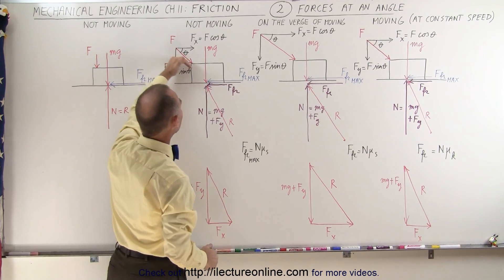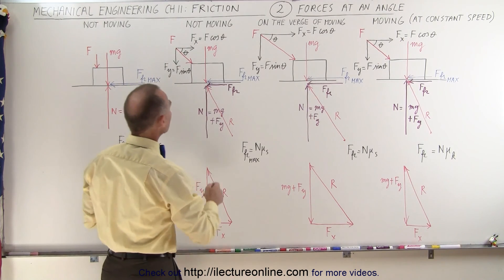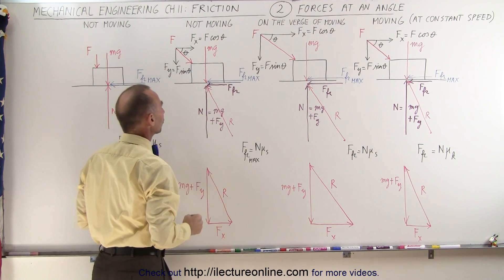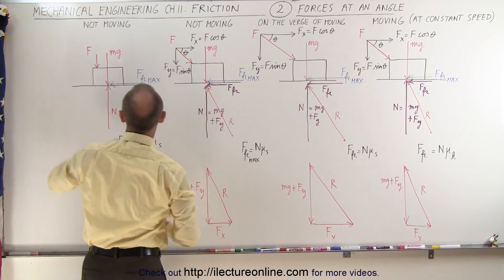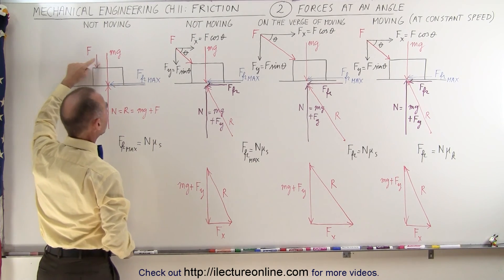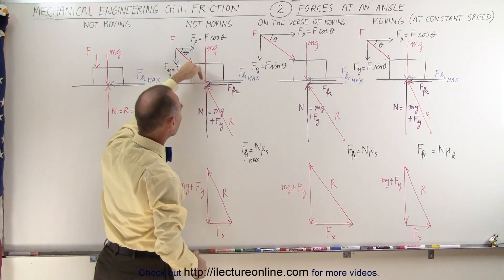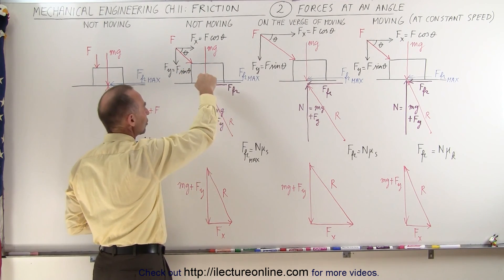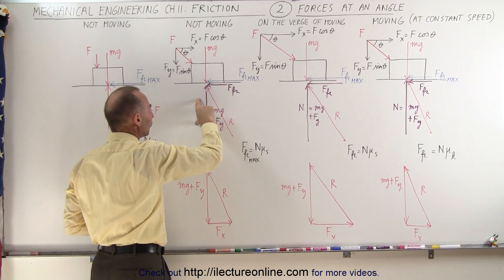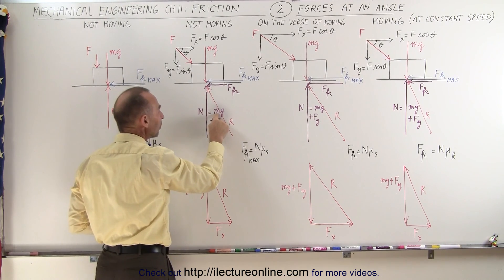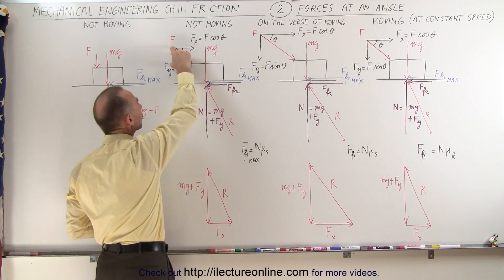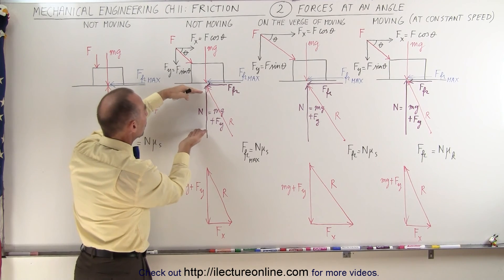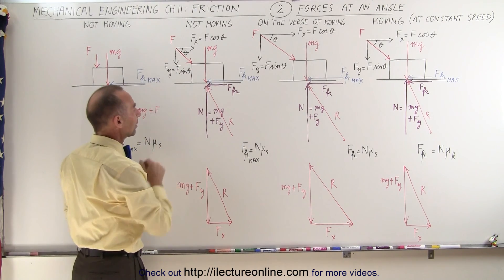Here we have a force acting at a slant — at an angle — which means there's a horizontal component and a vertical component of the applied force. The vertical component will do the same thing as the vertical force: it will add to the weight acting down on the surface between the block and the surface. You can then see that the normal force is going to be equal to the sum of the weight of the block plus the y-component of the applied force. So the normal force will be bigger than it normally would be if it were only counteracting the weight of the block.